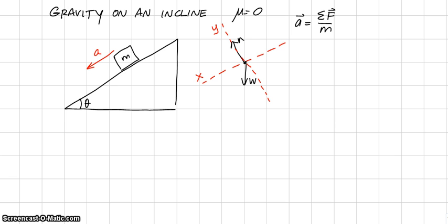What you'll notice is that the weight vector doesn't point along the x-axis or the y-axis — it's at an angle. That means it has a component in the x-direction and a component in the y-direction. We need to break this vector up into components so that we can plug it into the two equations: acceleration in the x-direction equals sum of forces in x over mass, and acceleration in the y-direction equals sum of forces in y over mass.